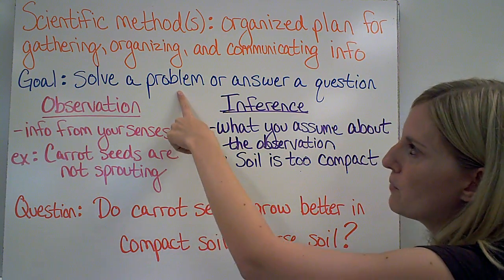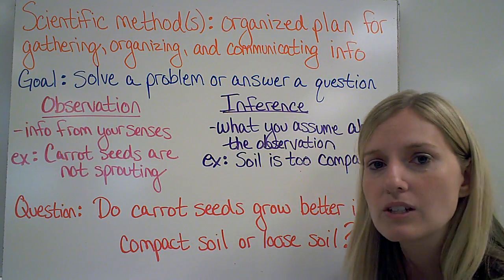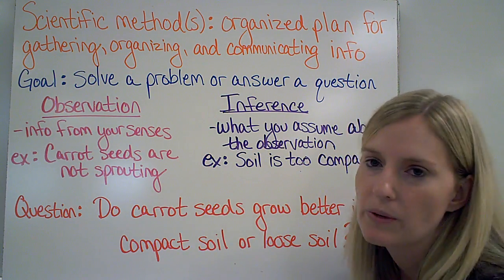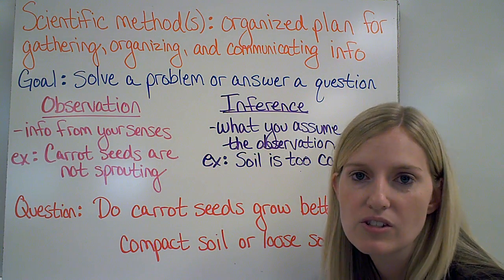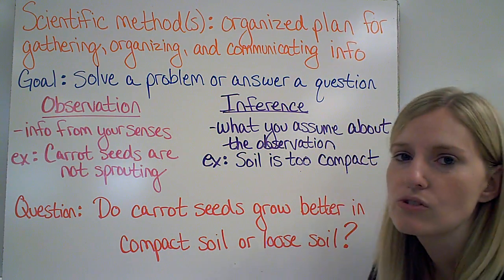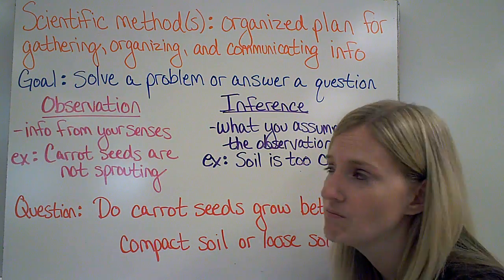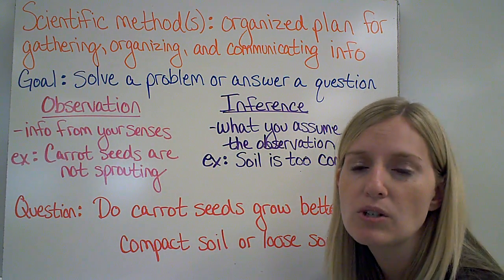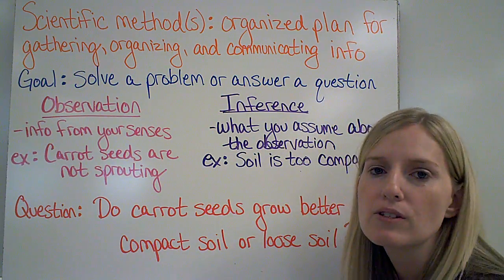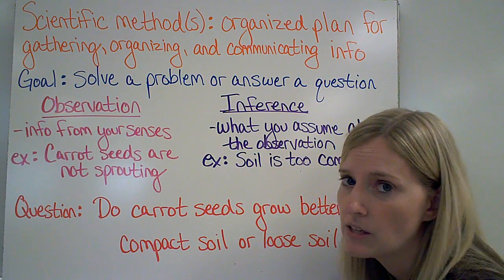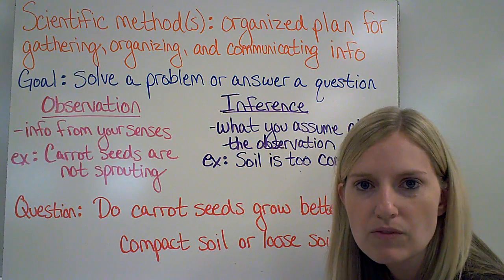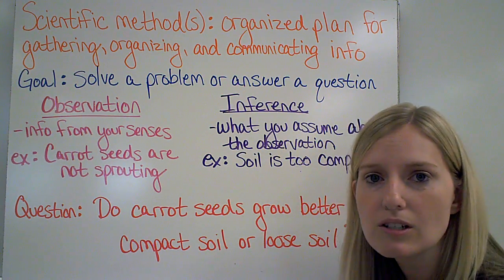Usually, to get our problem or question that we want to do an experiment on, we end up making an observation and an inference. An observation is when you get information from your senses — something you see or something you hear, etc. An inference is what you end up assuming about that observation. So I can observe that someone is wearing a blue shirt; my inference could be that that person's favorite color is blue. That may not be correct, but it is somewhat related to the observation. To find out if it is correct, we have to do an experiment.